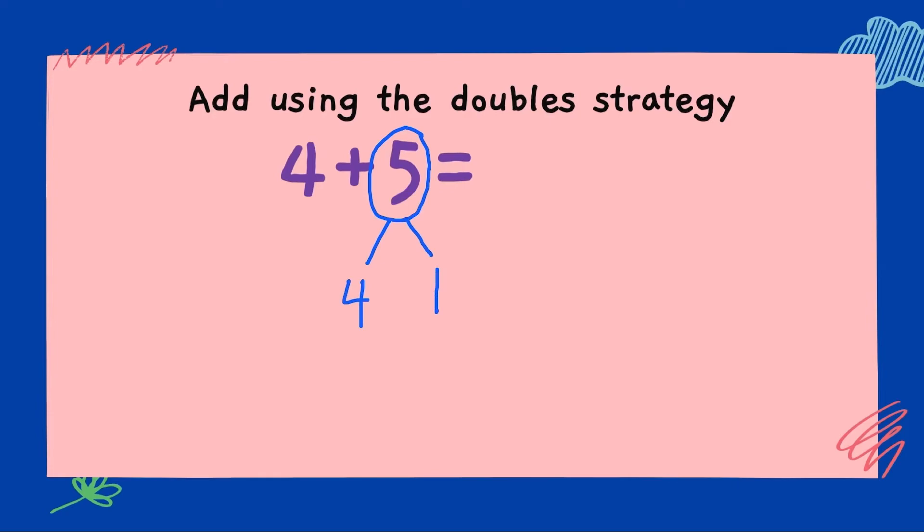We split our 5 to 4 plus 1. Now, what's 4 plus 4? 4 plus 4 is 8. And we have the leftover 1. So, double 4 is 8. Plus 1 equals 9. Easy? Let's try some more.